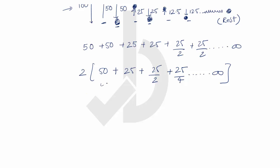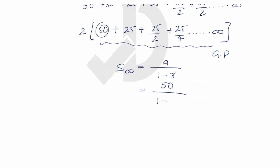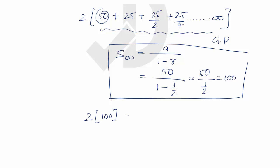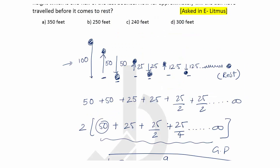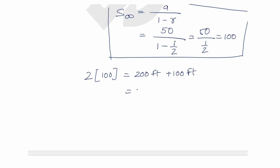The expression inside the bracket is in the form of a GP, that is geometric progression. We have the sum to infinity formula: A divided by (1 minus R). Here A equals 50 and R is the ratio, which is second term divided by first term, that is one half. So 50 divided by (1 minus 1/2) equals 100. Therefore the bracket equals 100, which means 2 times 100 equals 200 feet. Adding the initial 100 feet from where the ball was dropped gives us 300 feet.